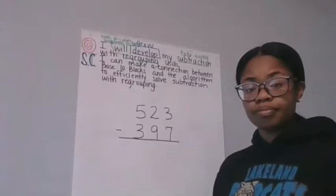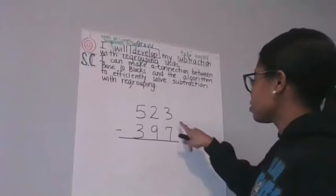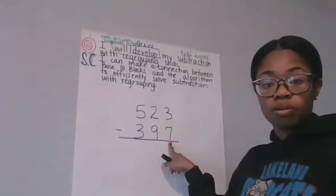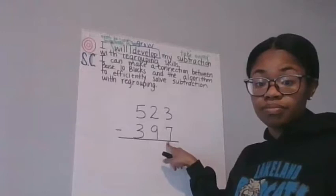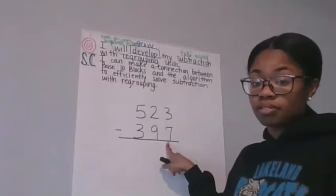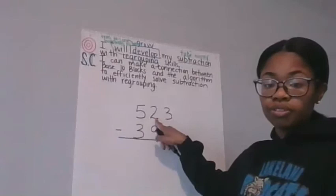What place do we start at? Definitely start in the ones place. I have three ones minus seven ones. Uh-oh. If I have three ones, can I take away seven? No. So what do we need to do? It starts with an R. That's right, regroup.